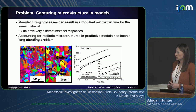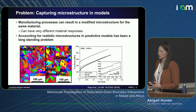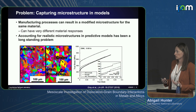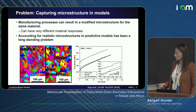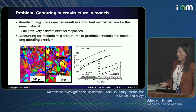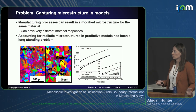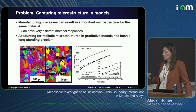Before getting into the details, I'd like to give the broad problem we're interested in addressing. This is focused on capturing the effect of microstructure on the mechanical response of metals. A good example is this: one sample has been additively manufactured and another has been cast — both stainless steel. The grain morphology between these two samples is very different, and this correlates to a difference in the macroscale mechanical response shown in the stress-strain curves, particularly a big difference in yield stresses. This is what we're trying to capture with predictive modeling approaches.